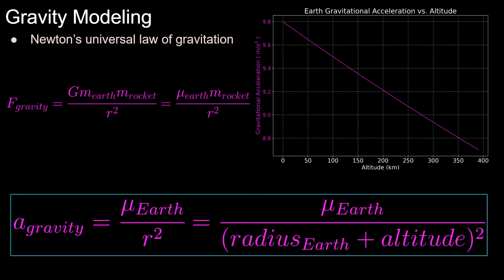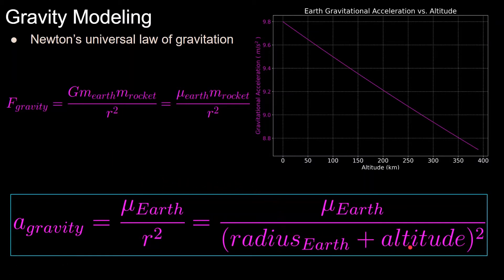For the acceleration due to gravity, we use Newton's universal law of gravitation, which states that the force due to gravity on the rocket equals the gravitational constant times the mass of the Earth times the mass of the rocket, divided by the distance between them squared — that's the distance from the center of mass of the Earth to the rocket, not the Earth's surface. Since the gravitational constant and mass of the Earth are both constant, we combine them into a mu value for the Earth. Using Newton's second law, the magnitude of gravitational acceleration equals mu over r squared, where r is the radius of the Earth plus the altitude of the rocket.